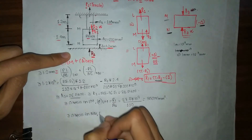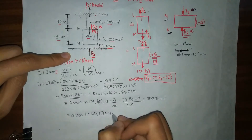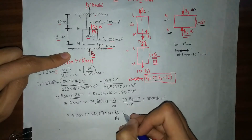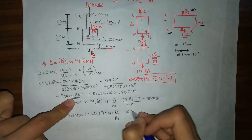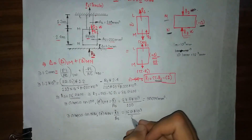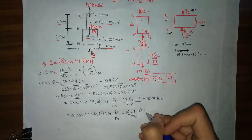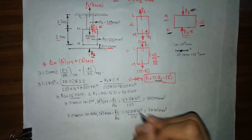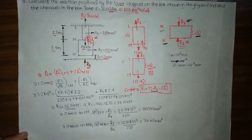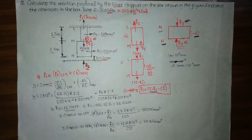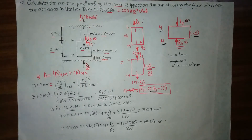Similarly, stress in MN, denoted sigma_MN, equals R2 divided by A2. R2 is 16.5 kN (16.5 × 10³ N) divided by A2 of 220 mm², giving sigma_MN equals 75 N/mm². In this way we have found the reactions due to the upper and lower supports. If you have any queries, comment below, and if you like our videos, please subscribe to the channel.